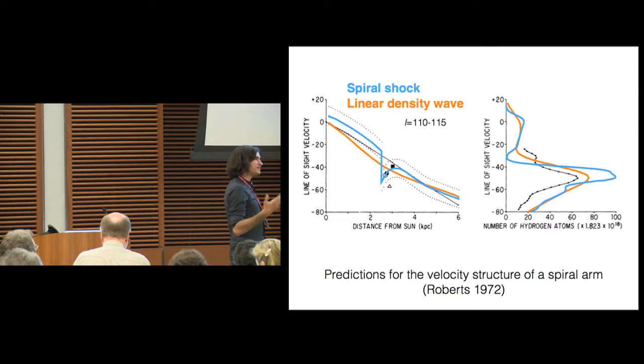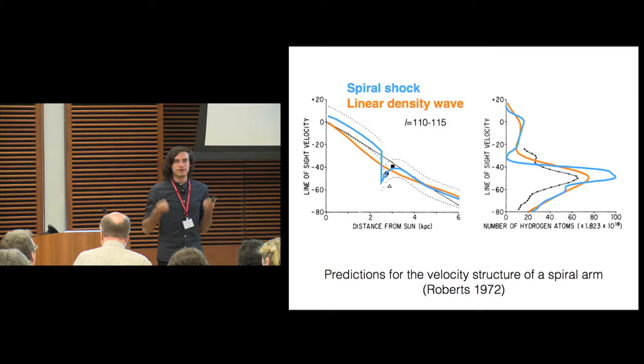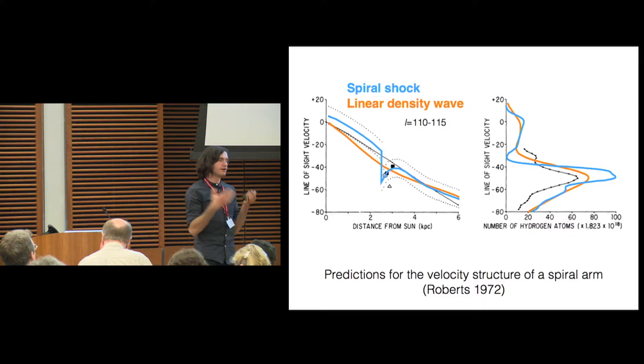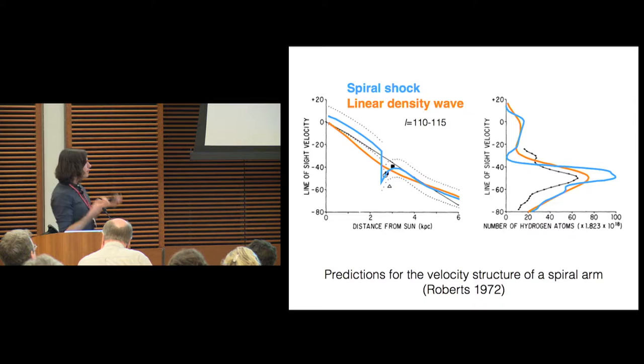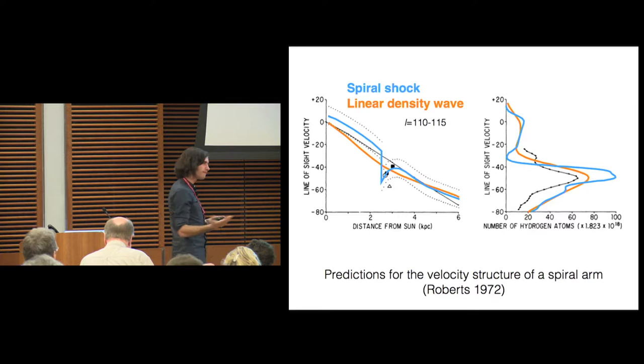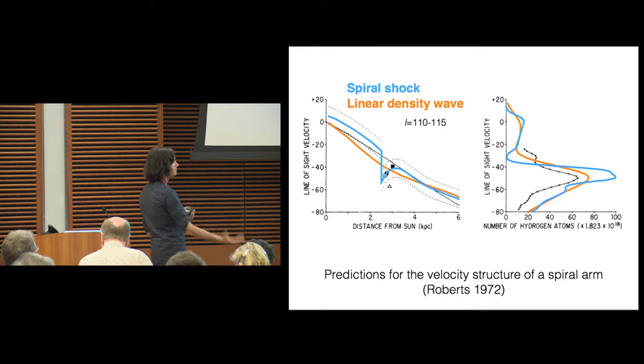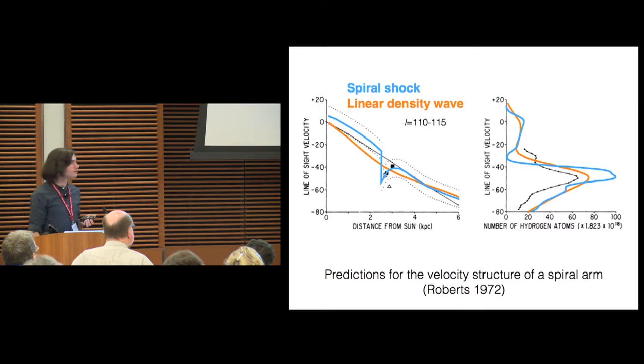For a practical example, here's a bit of simulation work from the heyday of spiral density wave theory. This is Roberts 1972, a classic paper about the structure of the Perseus arm. I'm showing two models here, a linear density wave model in orange and a non-linear density wave model in which a shock has been produced in light blue. On the left, I'm showing this in model space, velocity as a function of distance space, where these two models are very clearly different in extremely obvious ways. And on the right, I'm showing it in a transformation of the data.